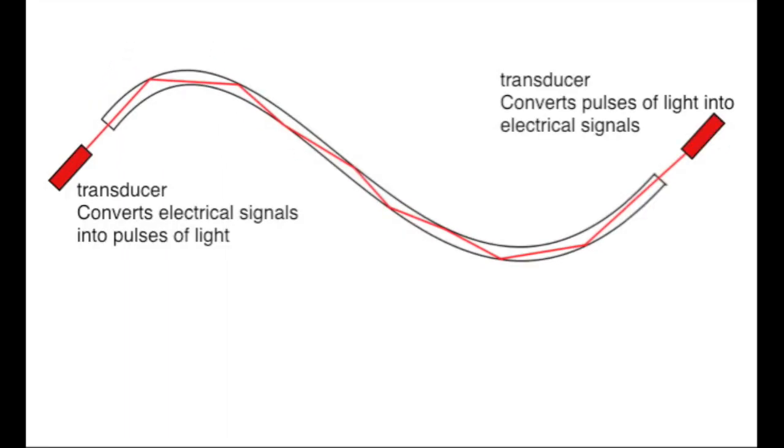At the receiving end, another transducer will convert the pulses of light back into electrical signals, where they can be decoded. Optical fibres are much cheaper and lighter than metal cables. The signals that transmit along them are subject to far less interference, so the final reception is clear.